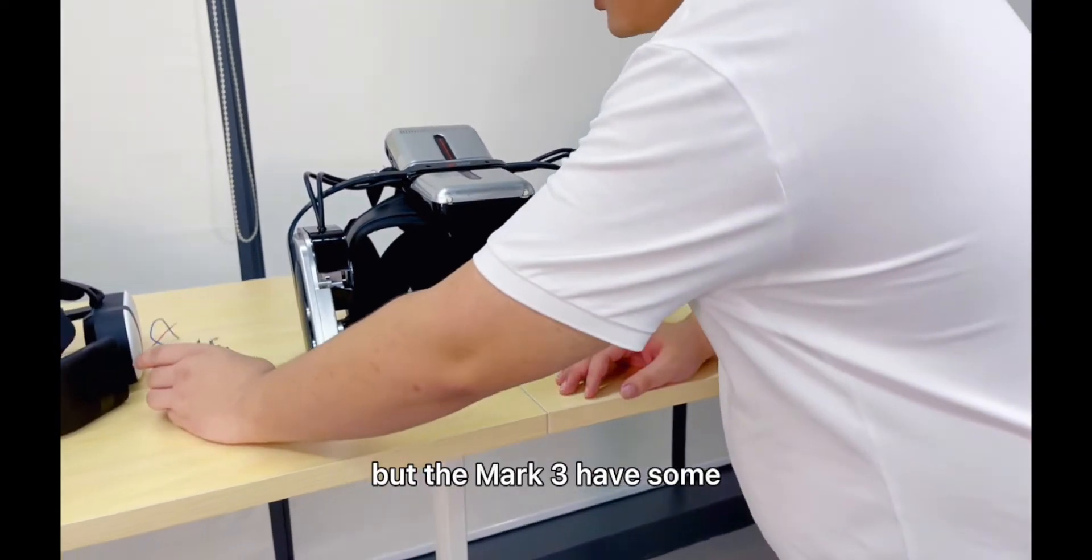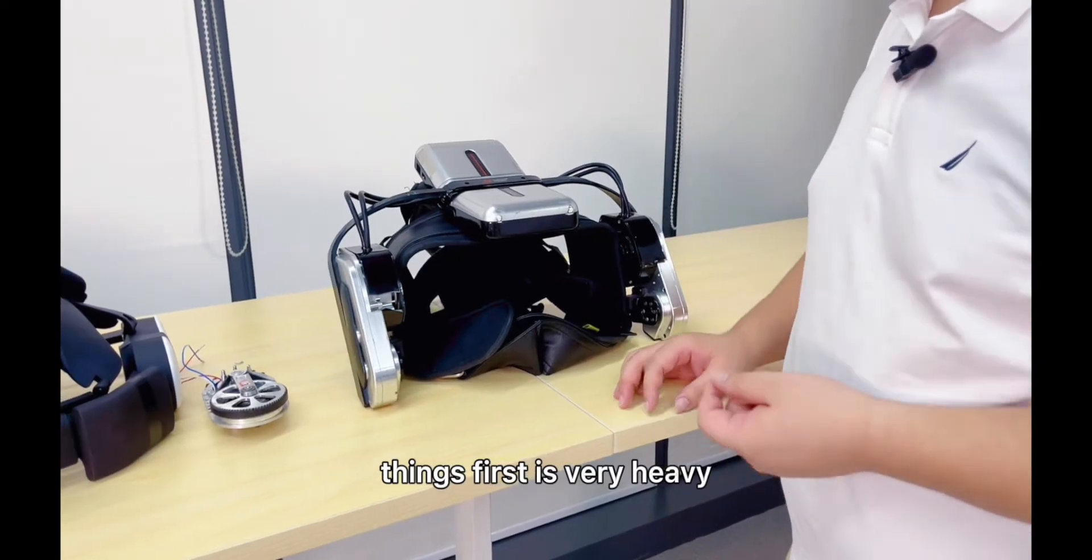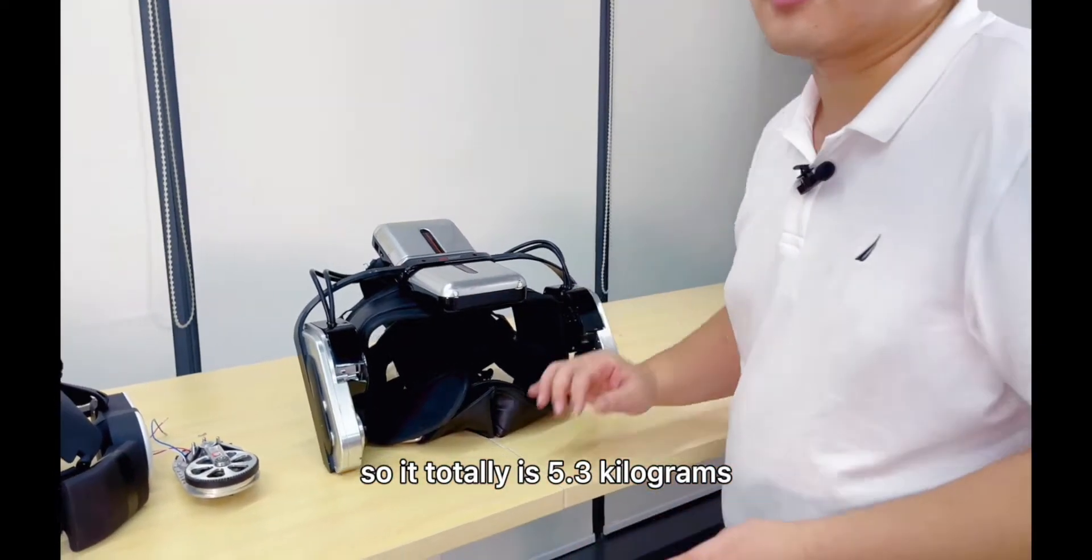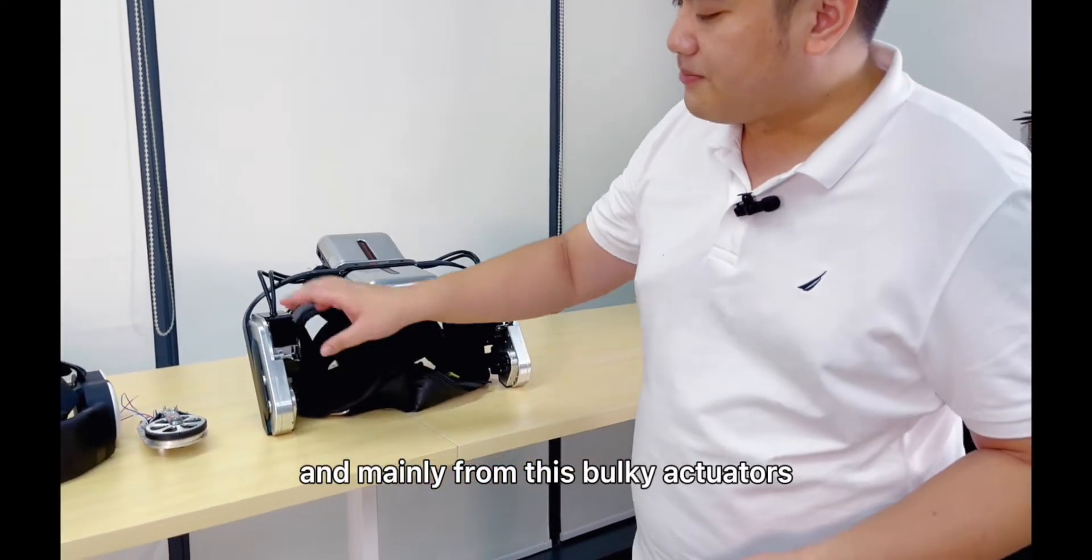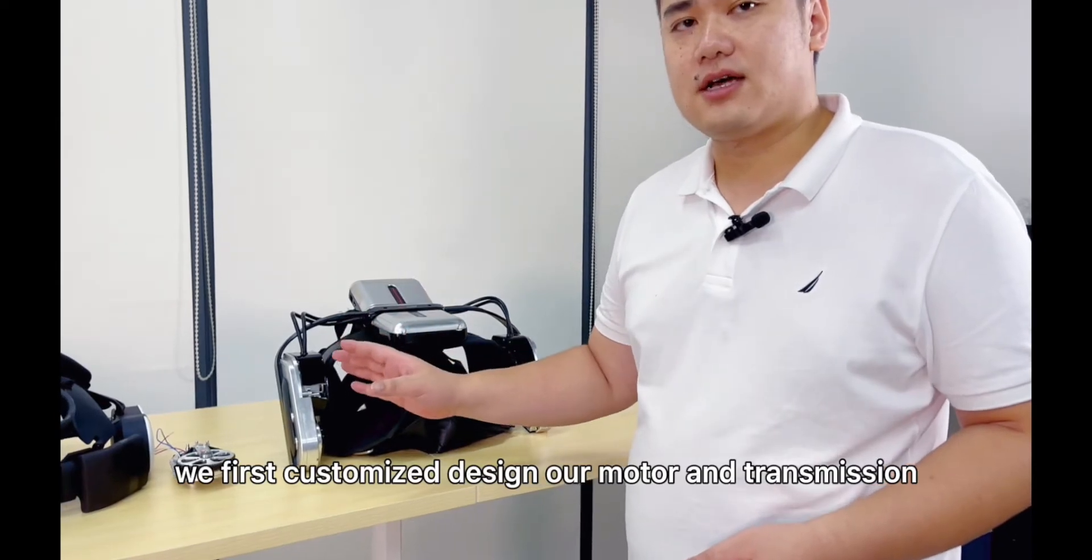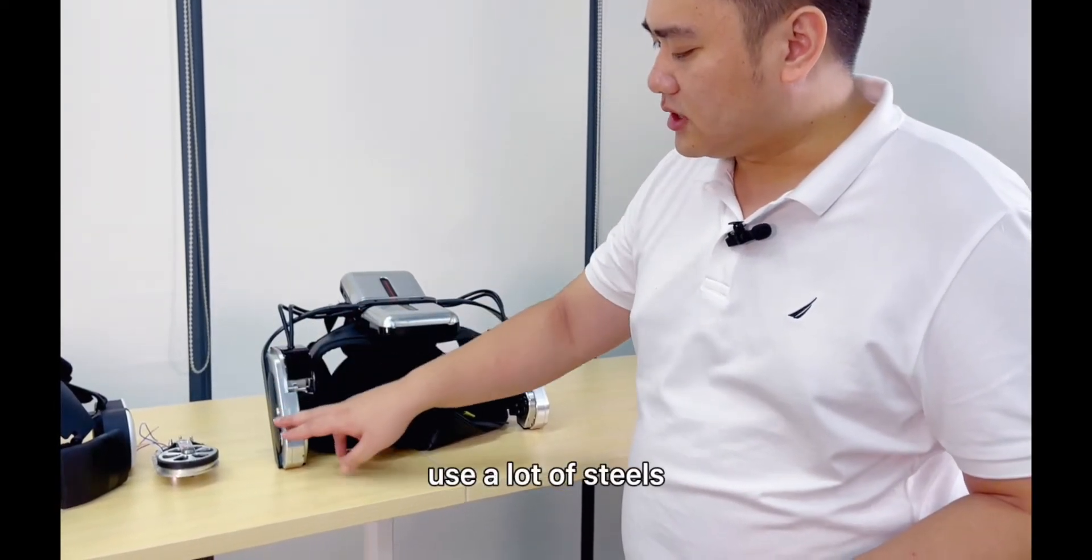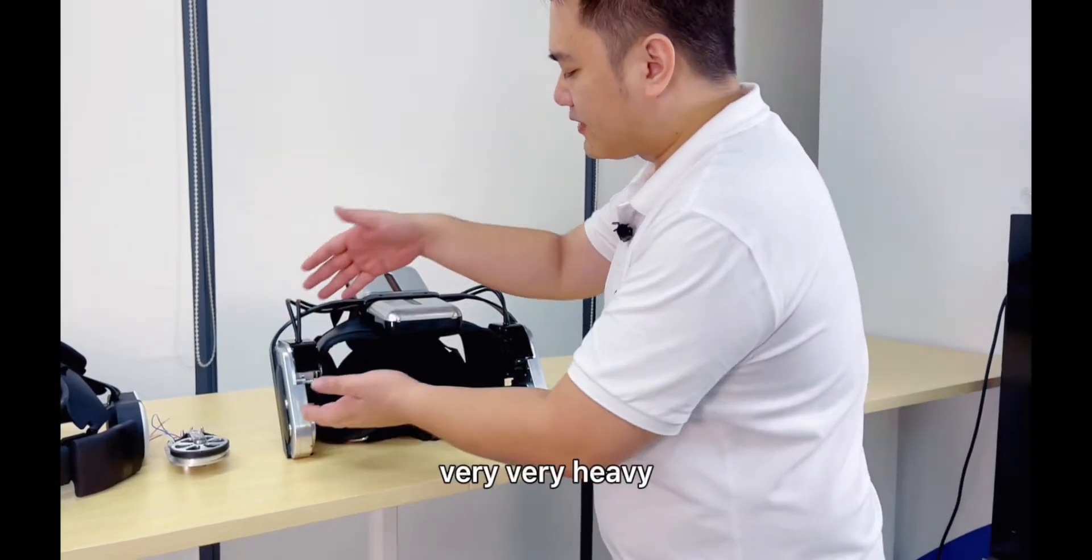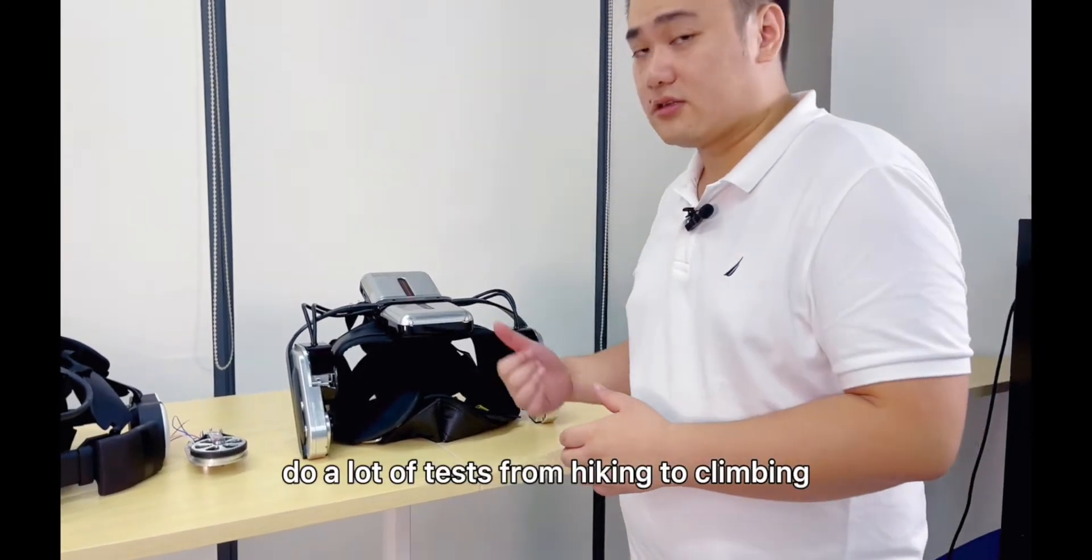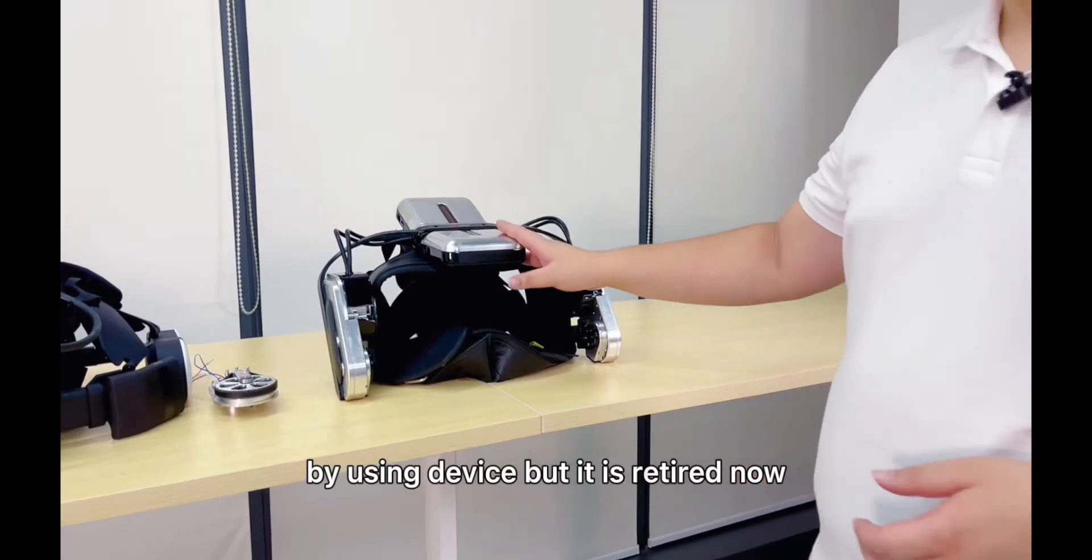But the Mach 3 has some issues. First, it's very heavy. The total is 5.3 kilograms, mainly from these bulky actuators. Because this generation, we first custom designed our motor and the transmission. You can see here that we use a lot of steel to design this thing. It's very bulky, very heavy. But basically, it's a good prototype. It did a lot of tests for hiking and climbing by using the device. But it is retired now.